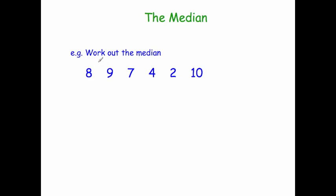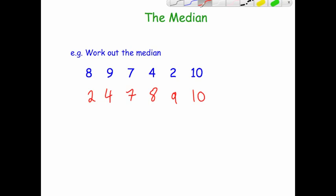This time we've been asked to work out the median of 8, 9, 7, 4, 2 and 10. So let's arrange them in numerical order: 2, 4, 7, 8, 9 and 10. We've still got six numbers. Let's cross them off — smallest, biggest, and so on.